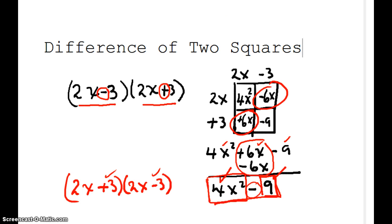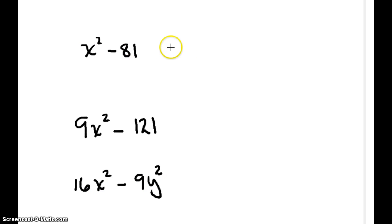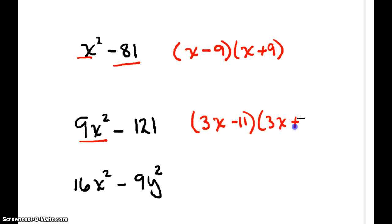x squared minus 81. Square root of x is x. Square root of 81 is 9. And I'm done. Perfect square. Perfect square. Is there a square root of 9x squared? Absolutely. 3x. Is there a square root of 121? Absolutely. 11. And then I write the positive.